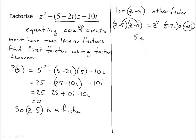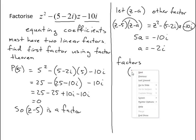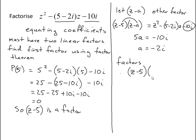5a is going to equal minus 10i. So my factors are: the first one we found, z minus 5, and the second one is z minus (minus 2i), which becomes z plus 2i. And there are our factors.